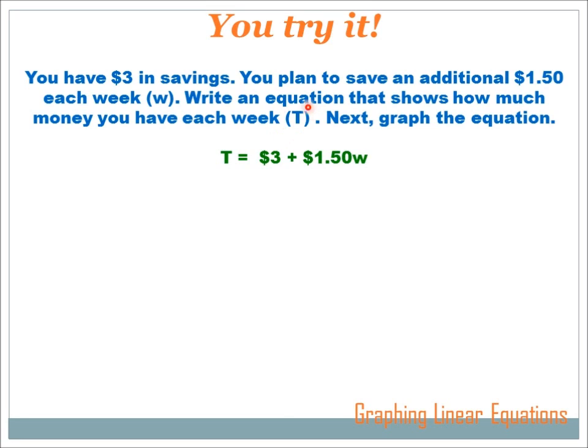We're trying to figure out how much we've got, T, after each amount of time. So, we'll say T equals. We know that we started with $3, so we're going to have $3 in the very beginning. But then, we're going to add $1.50 each week. So, it's $1.50 times the number of weeks that have gone by. The equation is the total amount saved equals $3 plus $1.50 times the number of weeks that have passed.